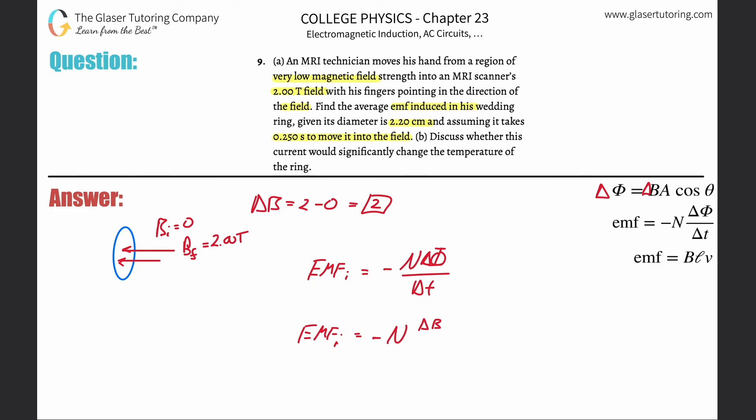Multiplied by the area, multiplied by the cosine of the angle between the normal of the area and the magnetic field. What's the normal of the area? Check out number one of this playlist. And then divided by the change in time.